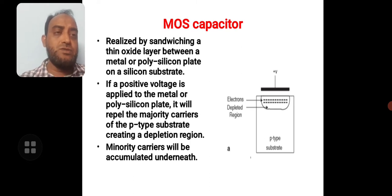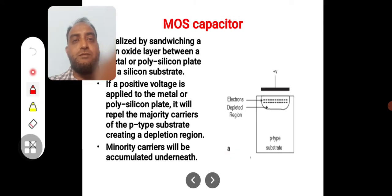If you add two diffusions on either side of this gate capacitor, that will become a MOS transistor. Now when you apply a positive voltage on the gate, that will repel the majority charge carriers of p-type silicon, which are holes from this place, because of the repulsion. These holes will move away from the silicon dioxide interface.